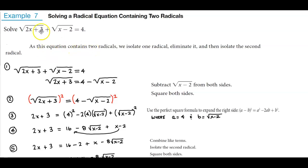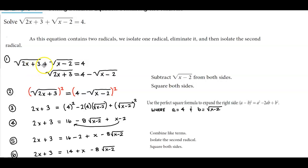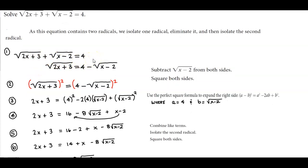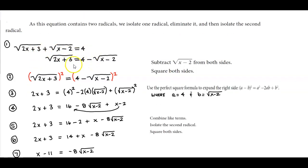As this equation contains two radicals, we isolate one radical, eliminate it, and then isolate the second radical. So we're going to subtract the square root of x minus 2 from both sides first, giving us the square root of 2x plus 3 equals 4 minus the square root of x minus 2.